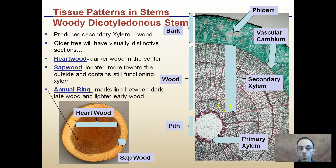Looking at a microscopic view, we have the primary xylem on the inside, the pith in the direct center, and the wood region made up of secondary xylem. Then we have the vascular cambium, where phloem and xylem are being produced. The bark region is here in general, and the phloem is only on the outside.